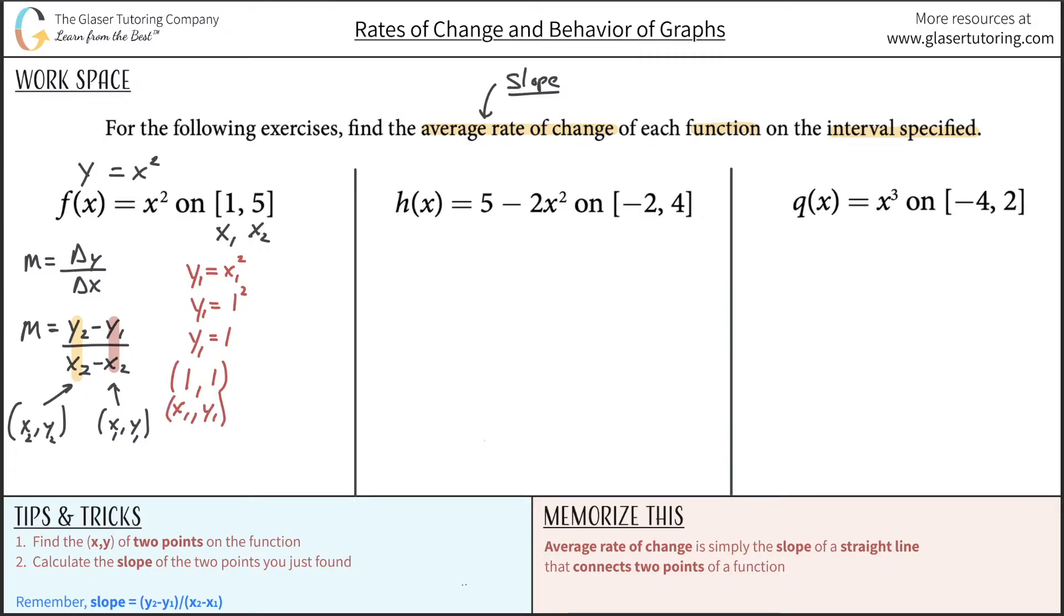Now what we need to do is the same thing for my second X value. So here Y2 is going to equal X2 squared. Y2 equals 5 squared, so Y2 will equal 25. So now let's write it out as a coordinate. The X value here was 5, and the Y value that got spit out was 25. This is now my X2 value and my Y2 value.